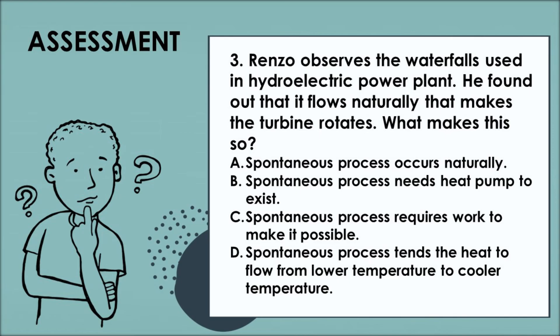Number 3. Rensa observes the waterfalls used in hydroelectric power plant. He found out that it flows naturally that makes the turbine rotates. What makes this so? A. Spontaneous process occurs naturally. B. Spontaneous process needs heat pump to exist. C. Spontaneous process requires work to make it possible. Or Letter D. Spontaneous process tends the heat to flow from lower temperature to cooler temperature.